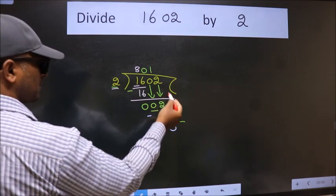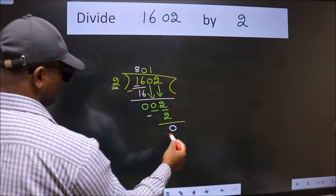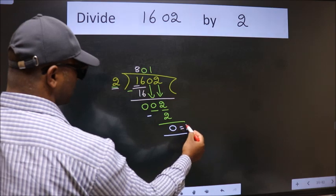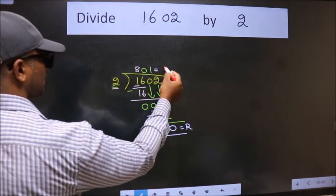No more numbers to bring it down, so we stop here. This is our remainder and this is our quotient.